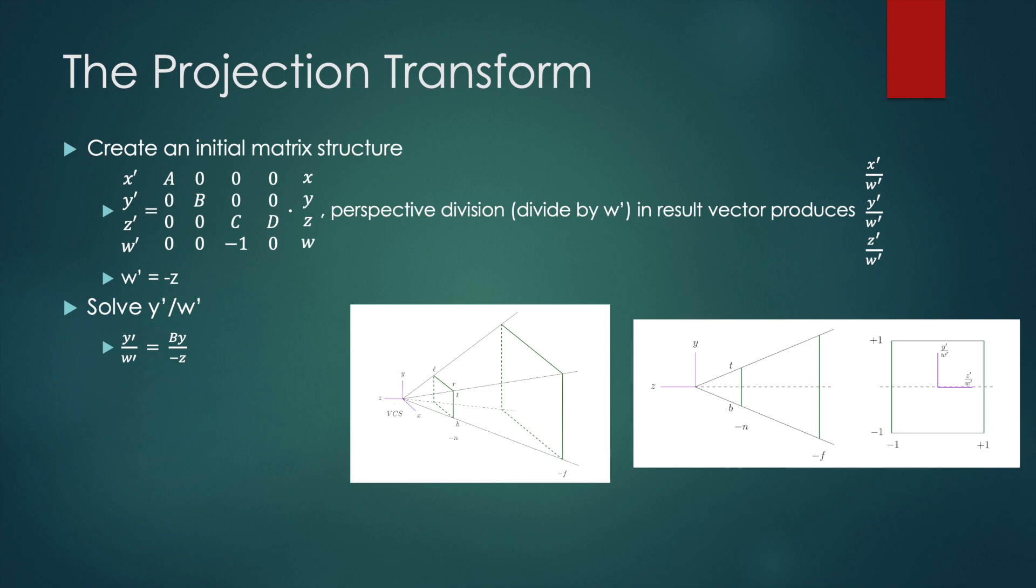Now I think of the near clipping plane as sort of the screen and we want to find where the line from the viewpoint to the yz point intercepts the screen. So to do this we will need to get the slope which is y over z rise over run and multiply it by the depth of the near plane which is n.